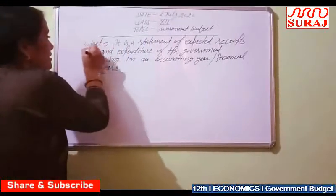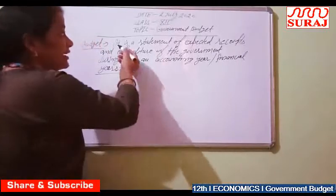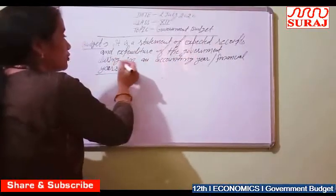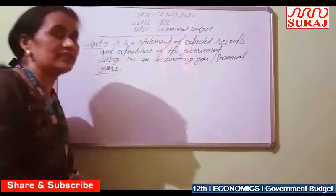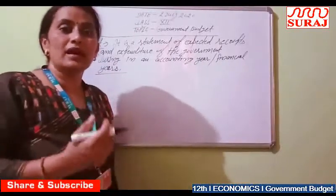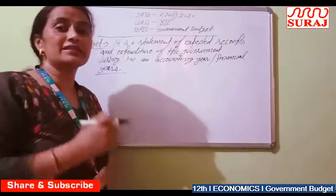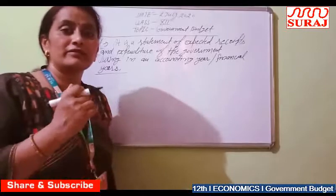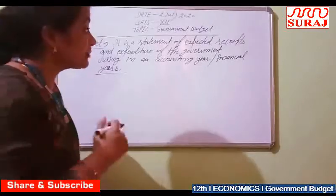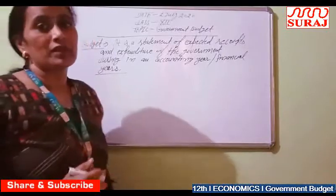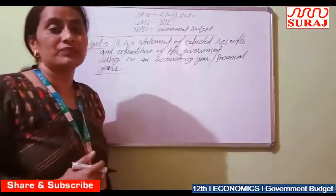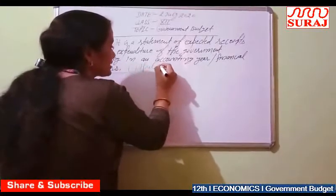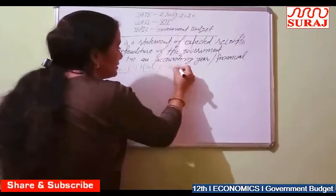First of all, what do we mean by the Budget? It is a statement of expected receipts and expenditure of the government during an accounting year or financial year. We can say that it is the estimation of government expenditure and revenue during an accounting year. These are forecasting budgets. The accounting year or financial year is from 1st April to 31st March.